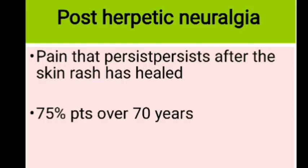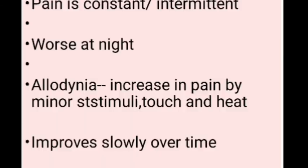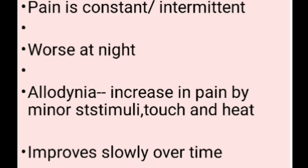Post-herpetic neuralgia is defined as pain that persists after the skin rash has healed. It is seen in 75 percent of patients over 70 years. The mechanism involves inflammation and occlusive vasculitis causing inflammation and destruction of peripheral nerves or central ganglia, leading to altered signal processing in the CNS. The pain can be constant or intermittent, is usually worse at night, and there is allodynia — increased pain from minor stimuli such as touch or heat. It improves slowly over time.